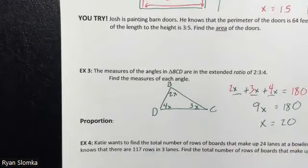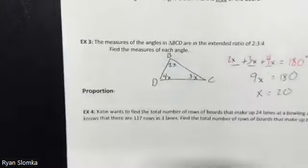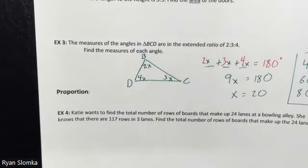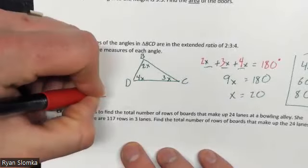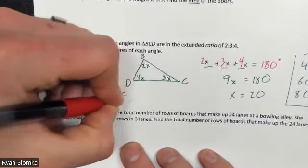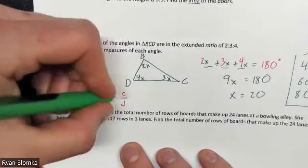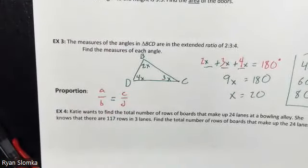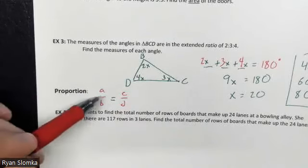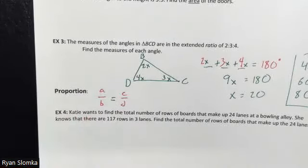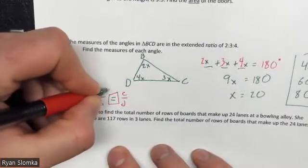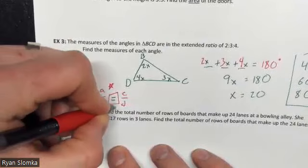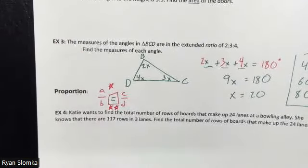Now let's bump up to proportions. A proportion is when you have two different ratios that are equal to each other. When you have two ratios equal to each other, you can do some pretty special things — especially if one part is unknown. The setup is: ratio = ratio, with an equal sign in the middle. That equal sign is the critical part — make sure it's not a multiplication, addition, or subtraction sign.